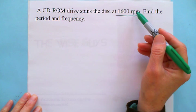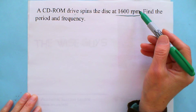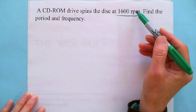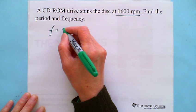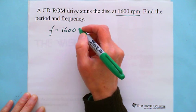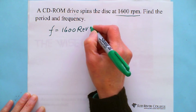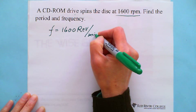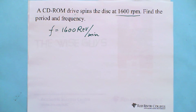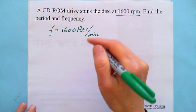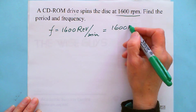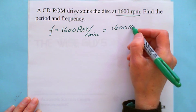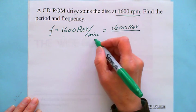1600 revolution per minute. The frequency equals 1600 revolution per minute. But the frequency is number of revolutions per second. That's why we need to convert 1600 revolution per minute. One minute equals 60 seconds.